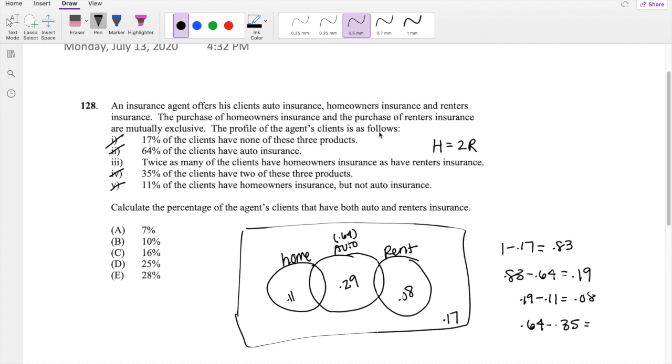So they're saying the homeowners insurance is twice as likely as renters insurance. The thing that we're looking for is both renters insurance and auto insurance. So we're looking for this part right here, both auto and renters. So this blue is what we're looking for. So I'm just going to assign some random variables. We know that this is X. And if this is X...